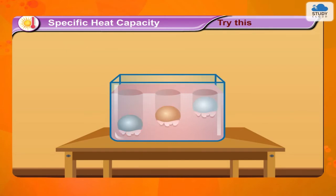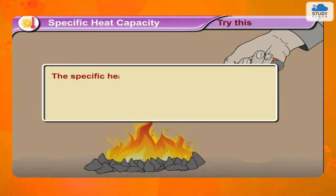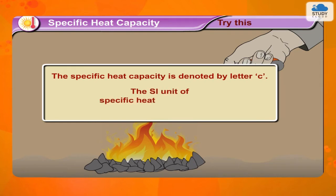The amount of heat energy required to raise the temperature of a unit mass of an object by 1 degree Celsius is called the specific heat of that object. The specific heat capacity is denoted by the letter C. The SI unit of specific heat is Joules per kilogram degree Celsius, and the CGS unit is calories per gram degree Celsius.